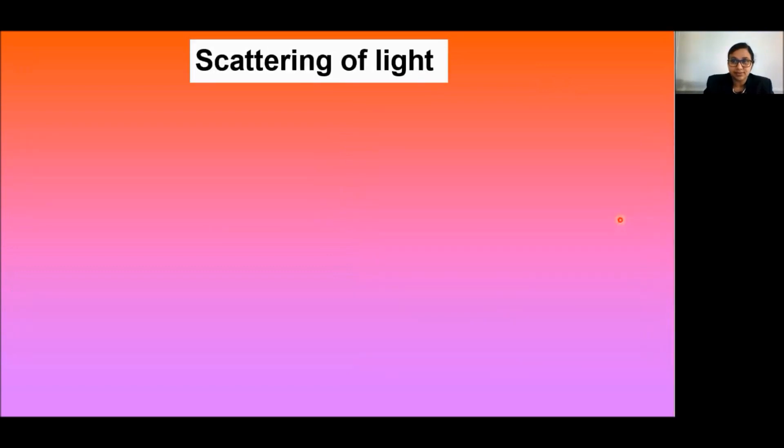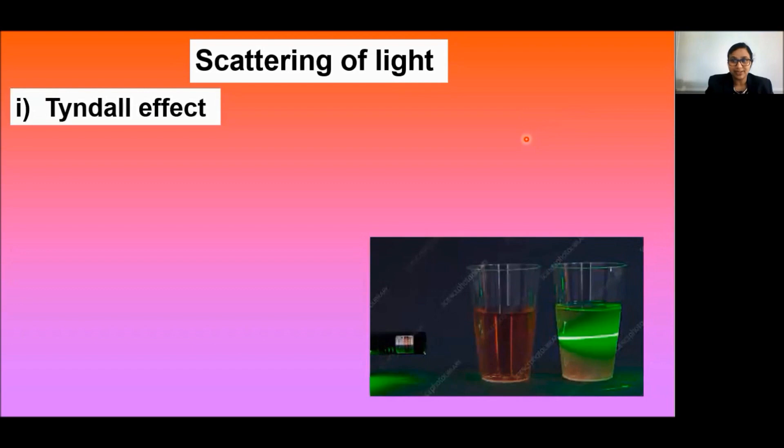Next, we learn about scattering of light. Scattering of light is the phenomenon in which light rays get deviated from its straight line path on striking an obstacle like dust, water vapors, gas molecules, etc. Scattering of light gives rise to many spectacular phenomena such as Tyndall effect, sun appearing red during sunrise and sunset, etc. So let us learn one by one.